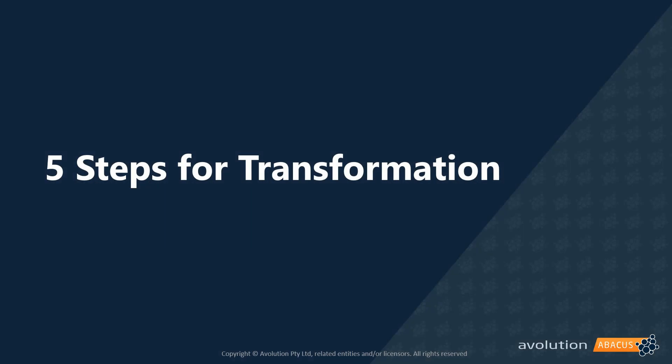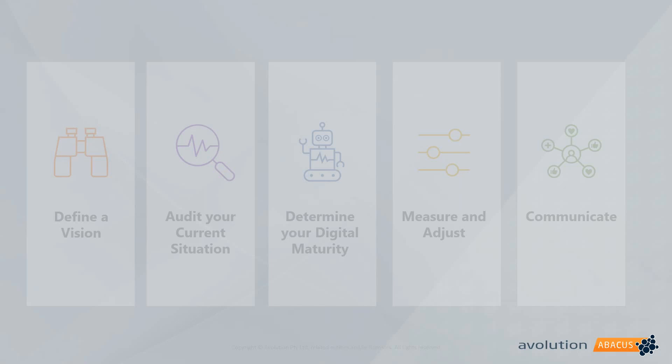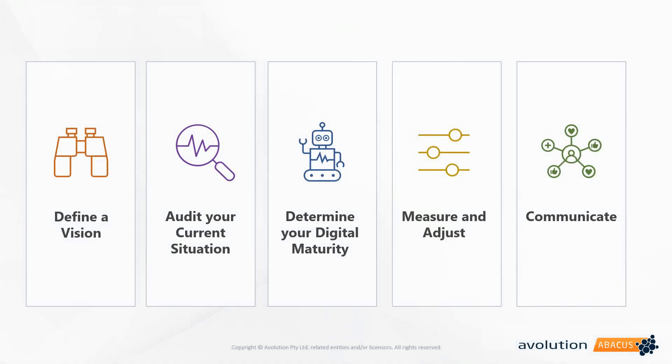Now let's talk about five steps for execution — because we don't want to just talk about what transformation looks like in nebulous terminology. We want to talk about five action-oriented steps to be able to execute these strategies. The five steps are: define a vision, then audit your current situation, determine your digital maturity, measure and adjust, then communicate.